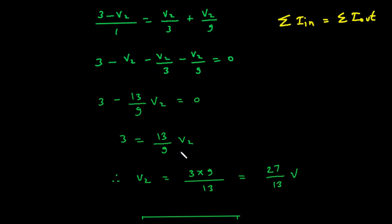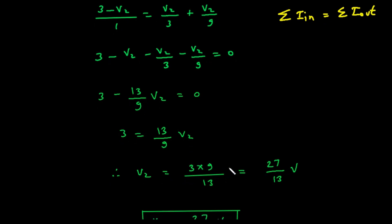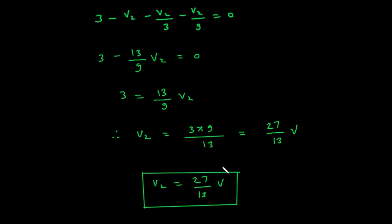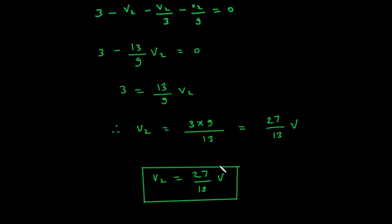To isolate V2, we can multiply both sides by 9, which gives us 27 on the left. 27 equals 13 times V2. Finally, we divide both sides by 13. V2 equals 27 divided by 13 volts. We have found the second piece of our puzzle. V2 is also 27 over 13 volts.